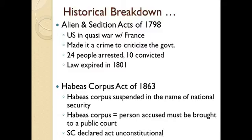During the Civil War, President Lincoln passed the Habeas Corpus Act of 1863, and Habeas Corpus was suspended in the name of national security. Basically, Habeas Corpus means that a person accused must be brought to a public court — you can't just hide them and not have them answer for their crimes. They have to be made aware of their charges and brought to trial in a public court. The Supreme Court declared that act unconstitutional and said the president was overreaching his authority, and Congress did not have the authority to give him this ability.